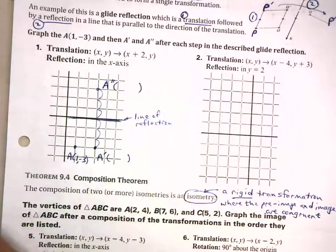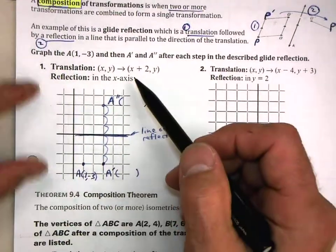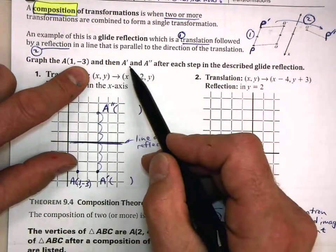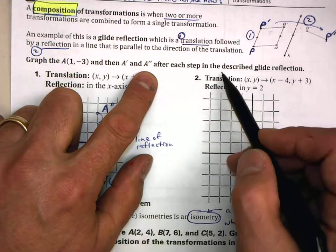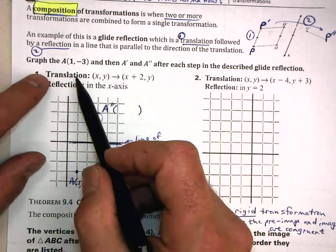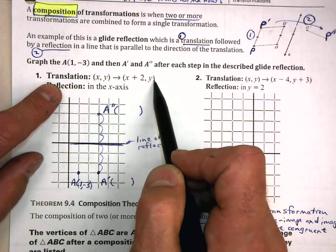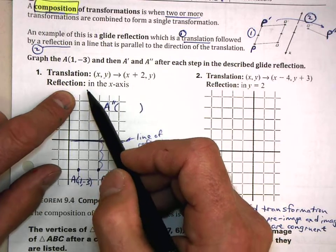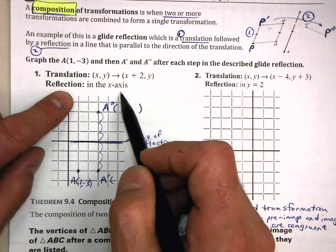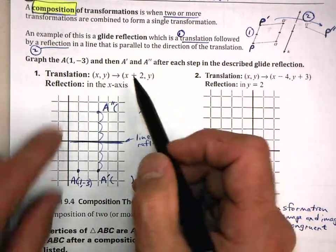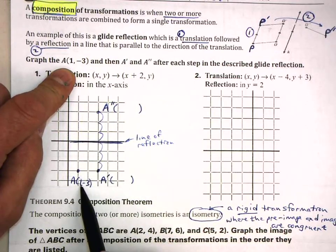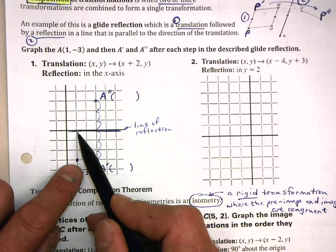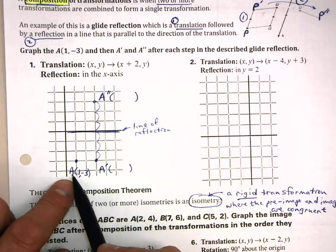So on your notes, you are ready now to do a composition. We're told to graph point A, which is at (1, -3), and then also A' and A'' after each step in the described glide reflection. First we do a translation as described in this rule of transformation, and then we do a reflection. We start off by plotting point A at (1, -3): start at the origin, go one forward on the X axis, then down three along the Y axis.